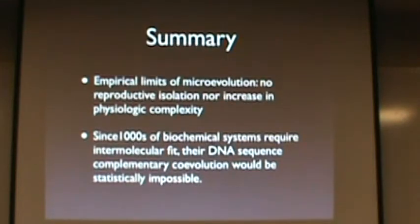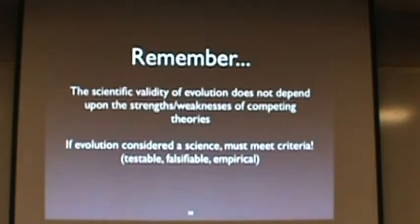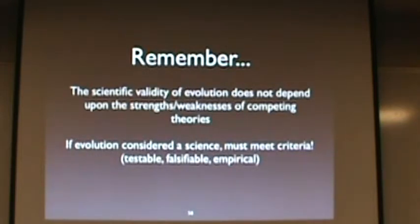The scientific validity of evolution does not depend upon the strengths and weaknesses of competing theories. If evolution is considered a science, it must meet the criteria: testability, falsifiability, and empiricism.